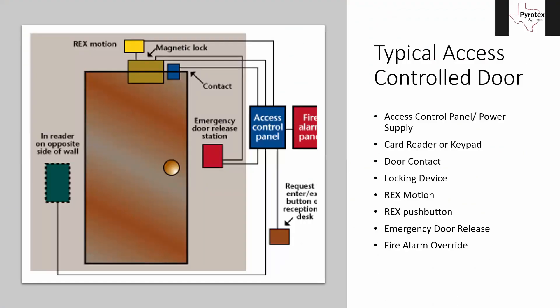Here is a diagram of a typical door setup, whether it's the only access control door in the building or one of many in a school. You have an access control panel — the brains of the operation and your power supply. I want to stress: we never use the fire alarm system to power a door lock. Door locks are not UL listed as fire alarm devices, so they don't get powered by our system.